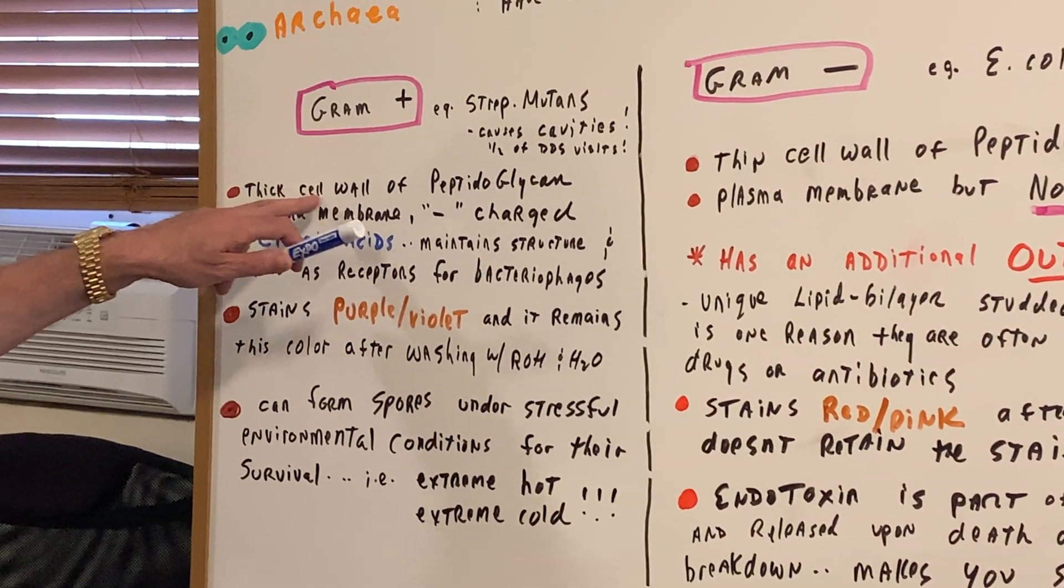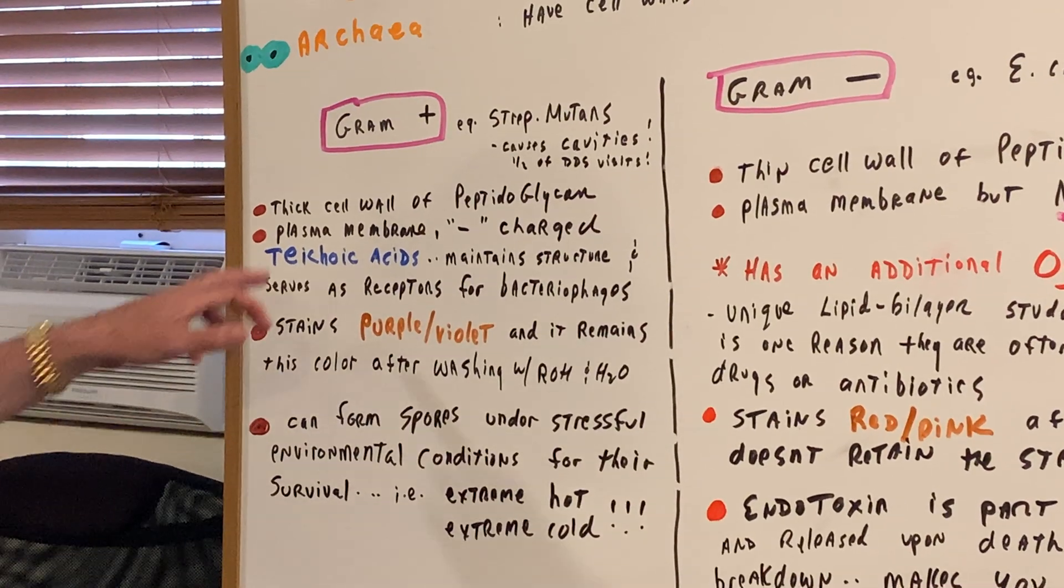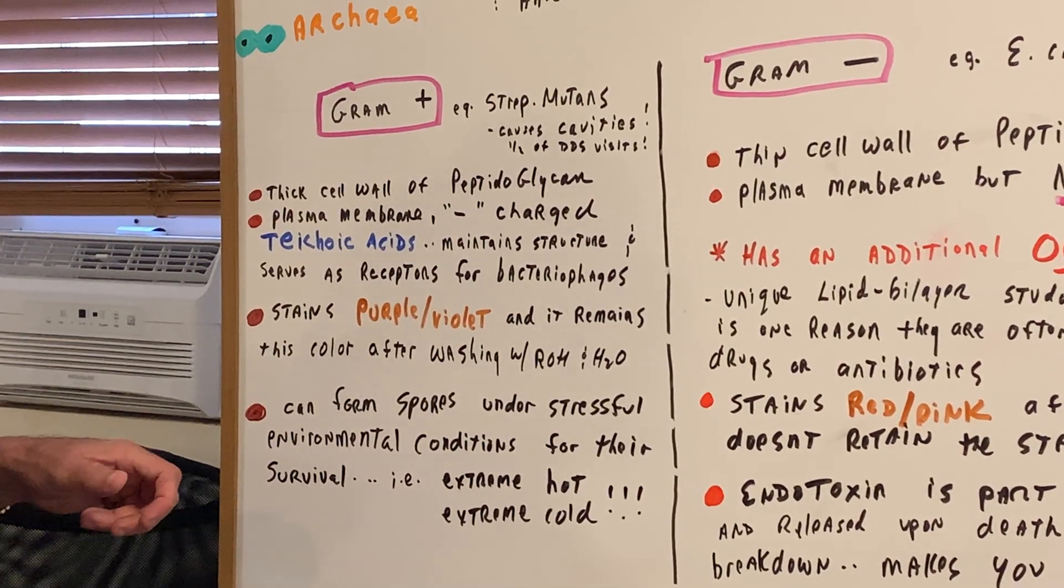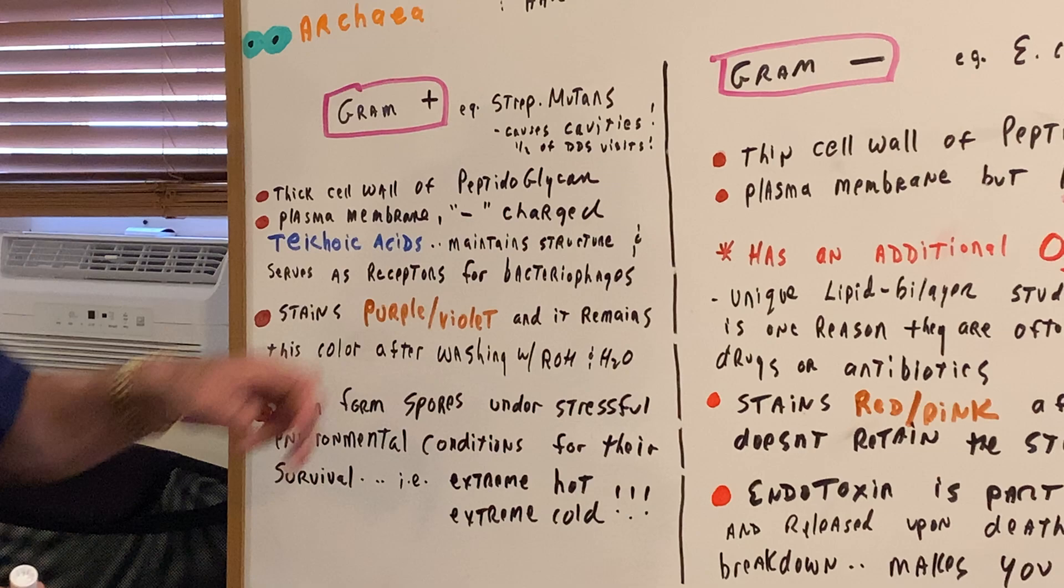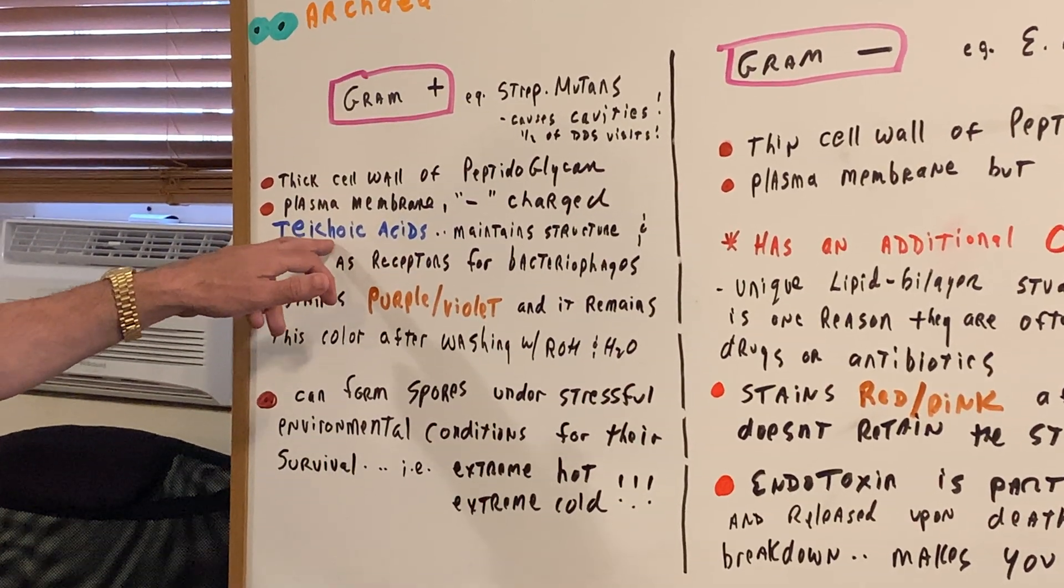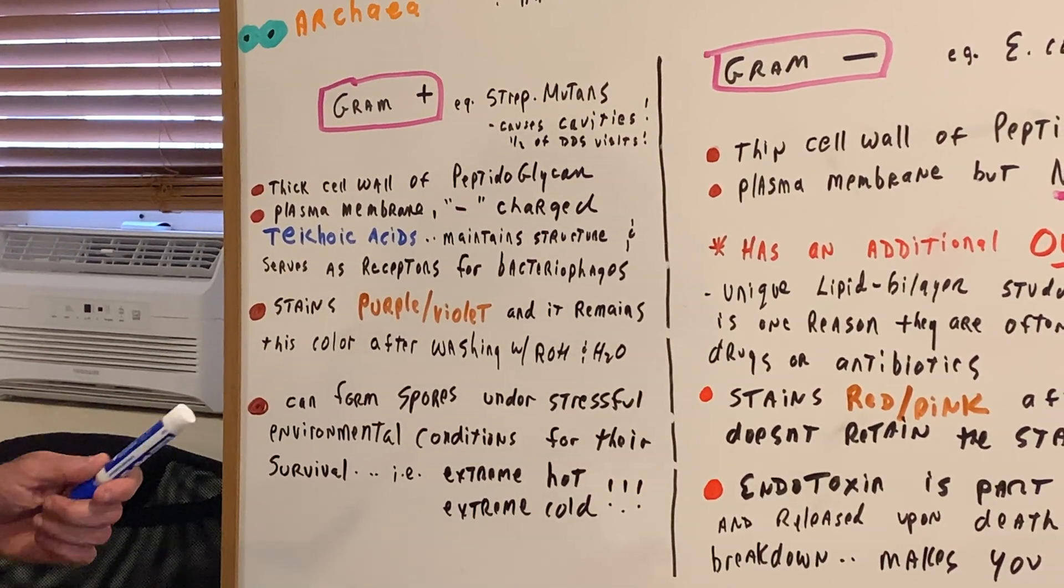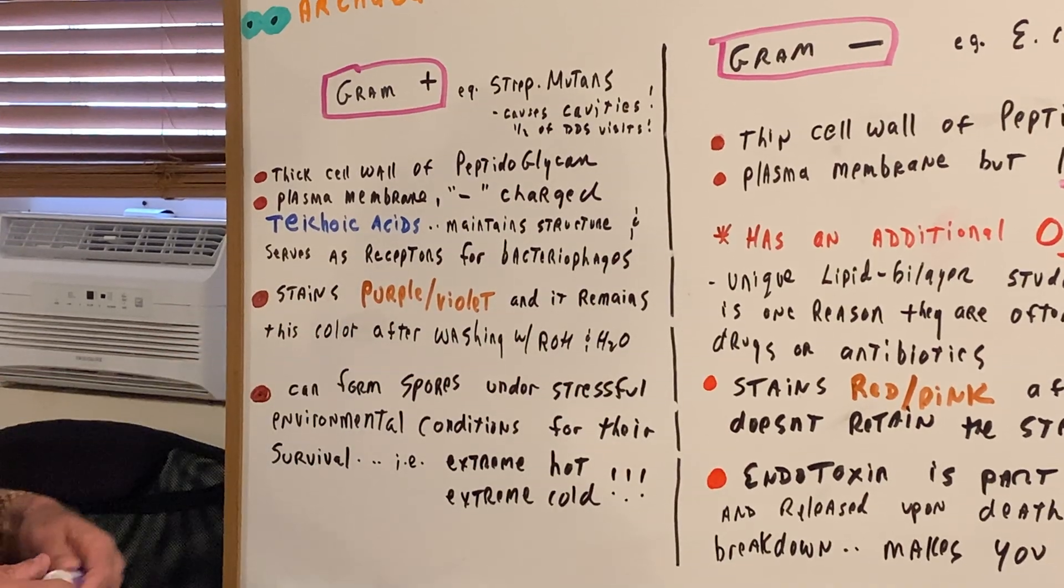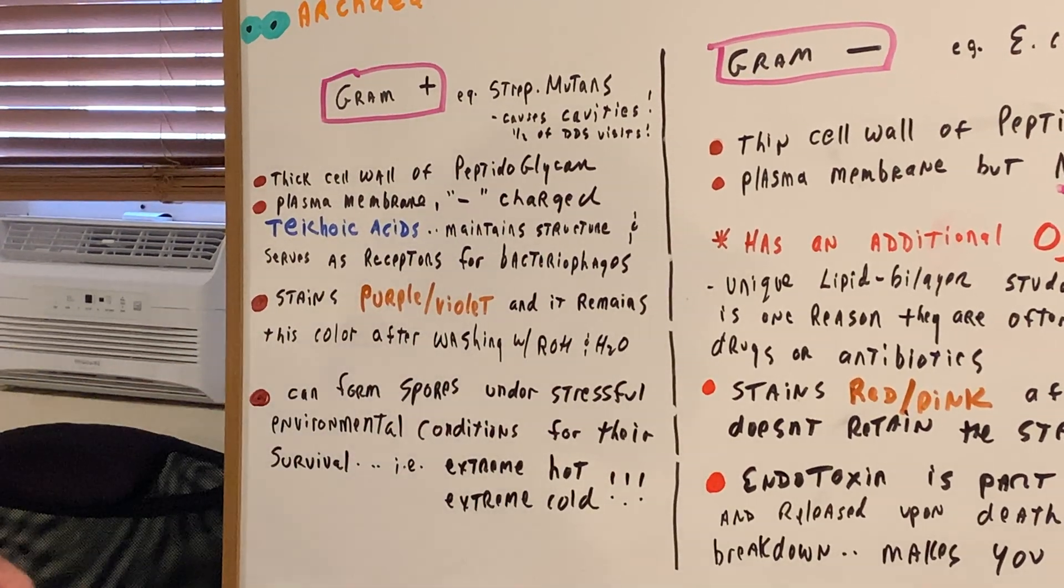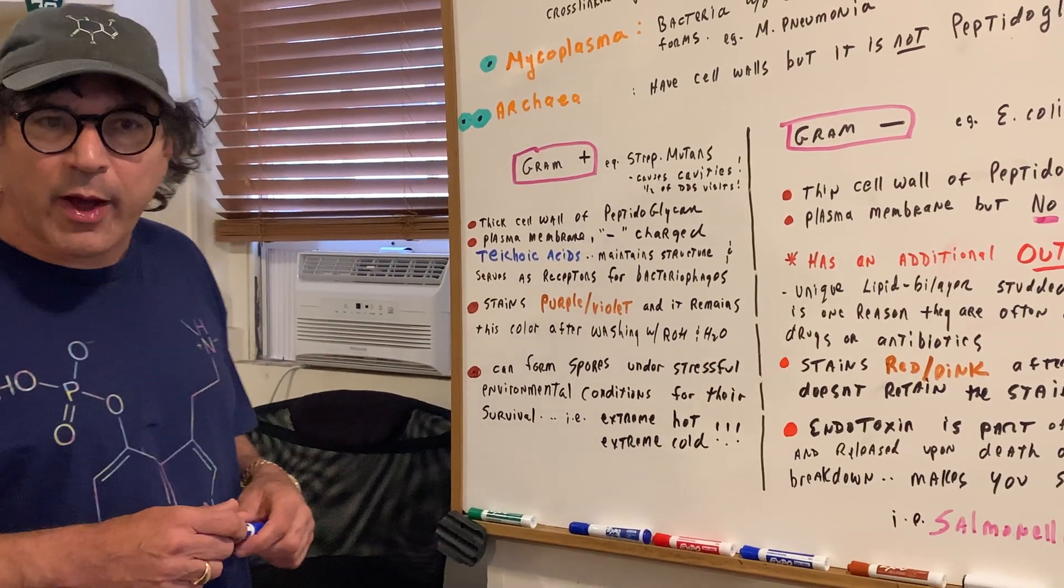Gram-positive bacteria have thick cell walls of peptidoglycans. They're very thick. They contain a plasma membrane. They're negatively charged gram-positive bacteria. And they're negatively charged because they contain teichoic acids. These acids maintain the structure and they serve as receptors for bacteriophages. And we'll be doing a problem in destroyer tonight on teichoic acids.